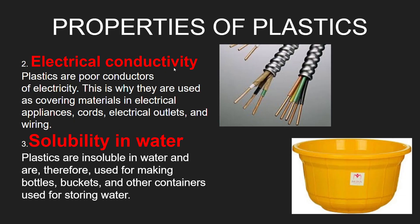Another property is electrical conductivity. Just like thermal conductivity, the electrical conductivity of plastics is also very poor. They are bad conductors of electricity as well. That is why they are used as a covering material in electrical appliances, cords, wires, electrical outlets, etc.